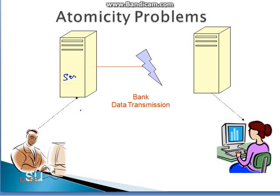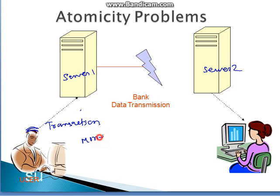Here is one server and here is another server — a bank data transmission problem. The user is sitting here and doing a transaction: a money transfer. For example, he is transferring money from Mr. X to Mr. Y — transferring 100 rupees. Once he puts in the request, it goes to server number one.